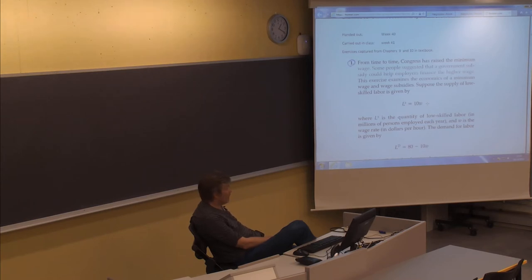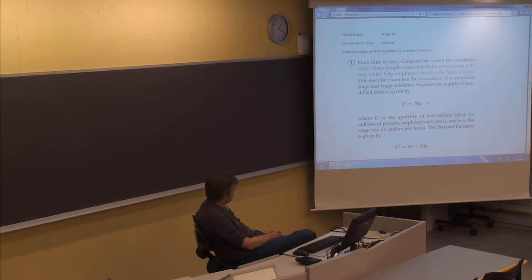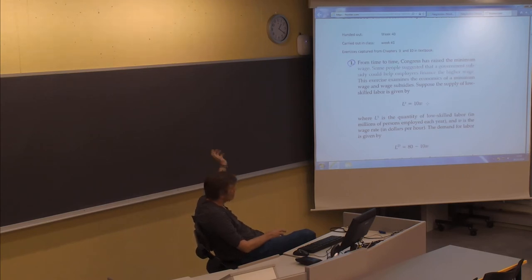This exercise is focused on the labor market. Suppose the supply of low-skilled labor is given by LS equal to 10W, where LS is the quantity of low-skilled labor in millions of persons employed per year, and W is the wage rate in dollars per hour. And then the demand for labor — labor demanders are typically companies or businesses — is given by LD equal to 80 minus 10W.